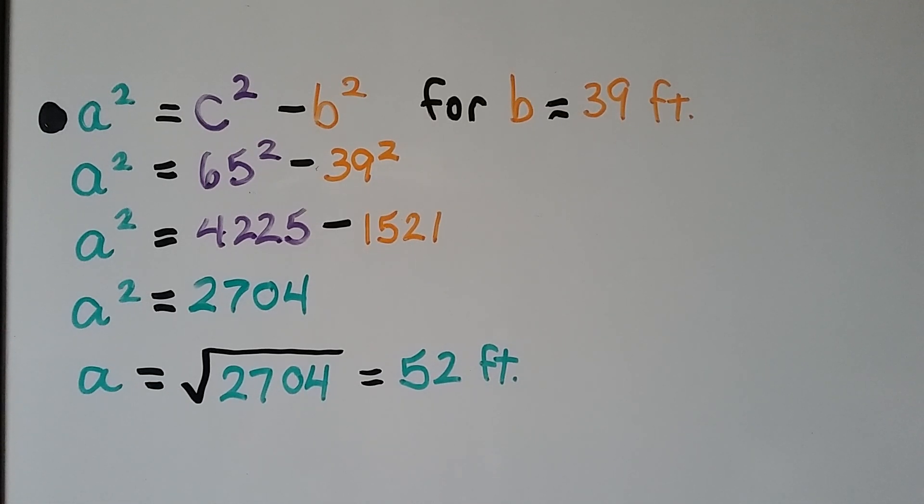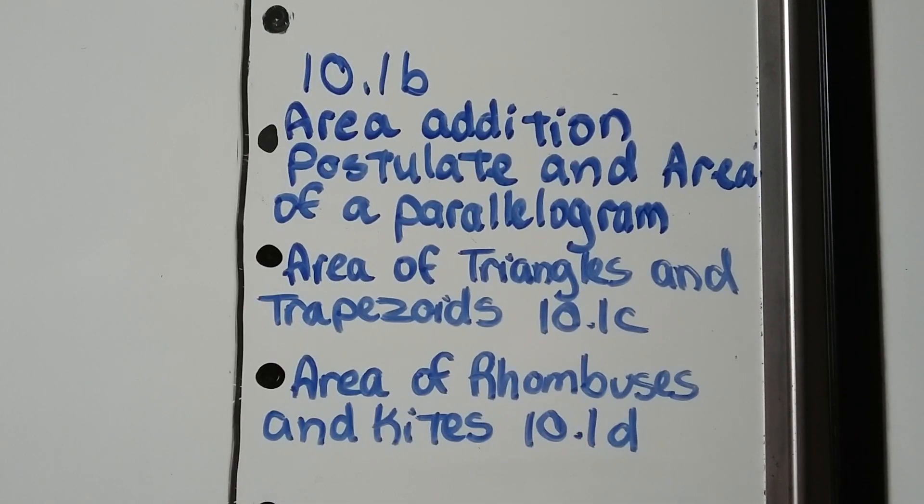So these are examples of literal equations. Our lesson 10.1 is split into four parts. This was the first part. We're next going to talk about area addition postulate and the area of a parallelogram in 10.1b. Then we're going to move on to area of triangles and trapezoids and then area of rhombuses and kites for the rest of 10.1.